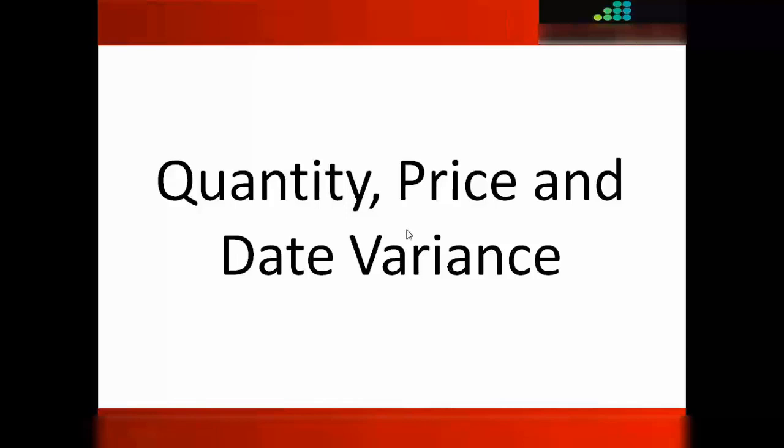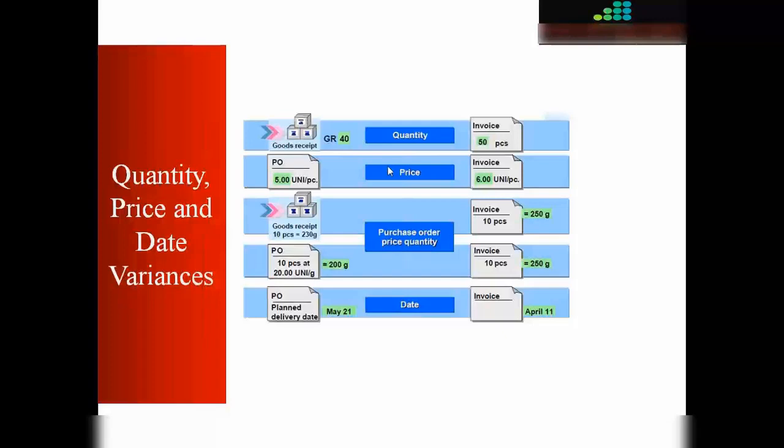Before we do the practicals, let's see this slide. When doing invoice receipt we can have different types of variances — quantity, price, or date. For quantity variance: say the purchase order is for 50 pieces, we received only 40 pieces, but the vendor sends an invoice for 50 pieces — we still need to receive 10 pieces, so the system will block it. This is a quantity block. For a price block: if the purchase order says $5 per piece and the invoice says $6 per piece, there is a difference in price and the system will block it again.